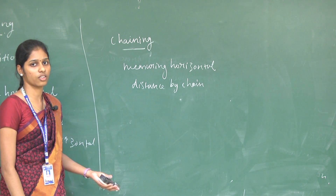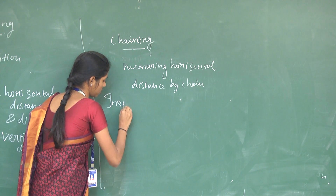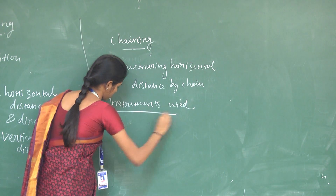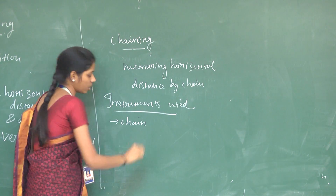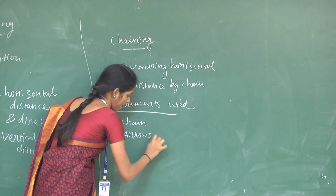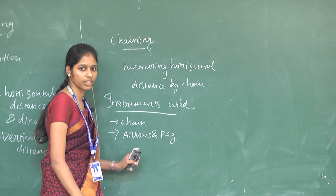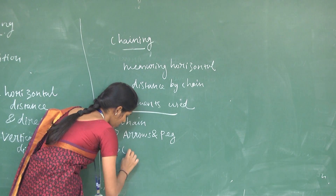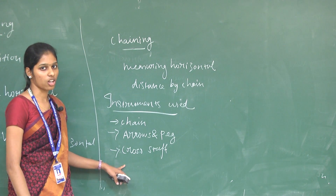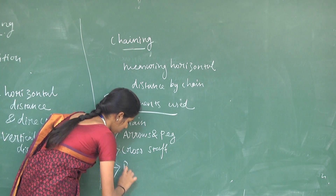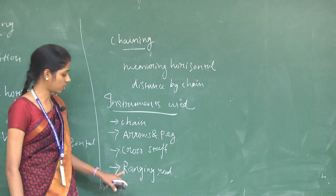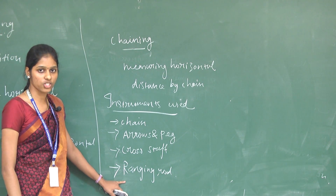The instruments used for chain surveying include: the chain, which is used to measure horizontal distance; arrows and pegs, used to mark the stations; cross staff, used to mark perpendicular offsets; and ranging rods, used for the process of ranging.